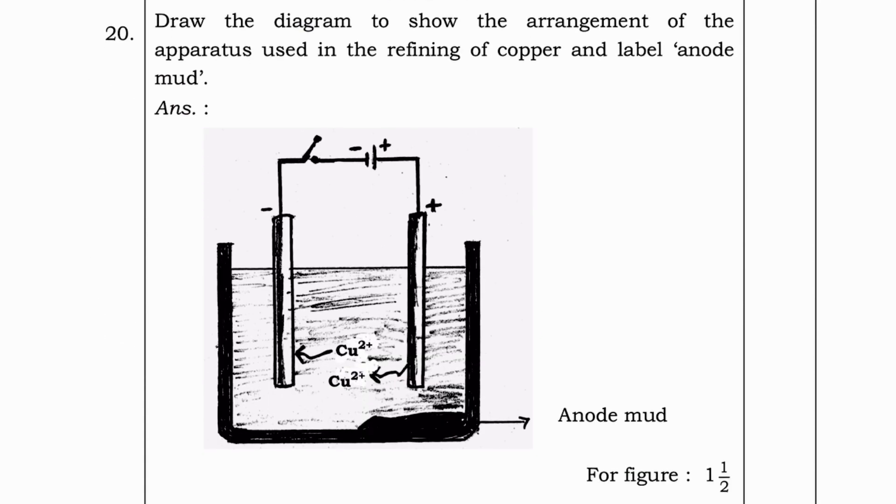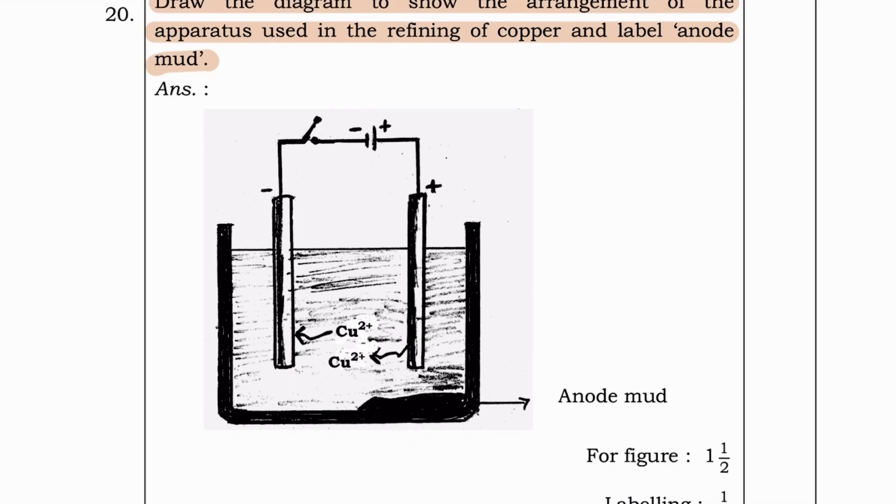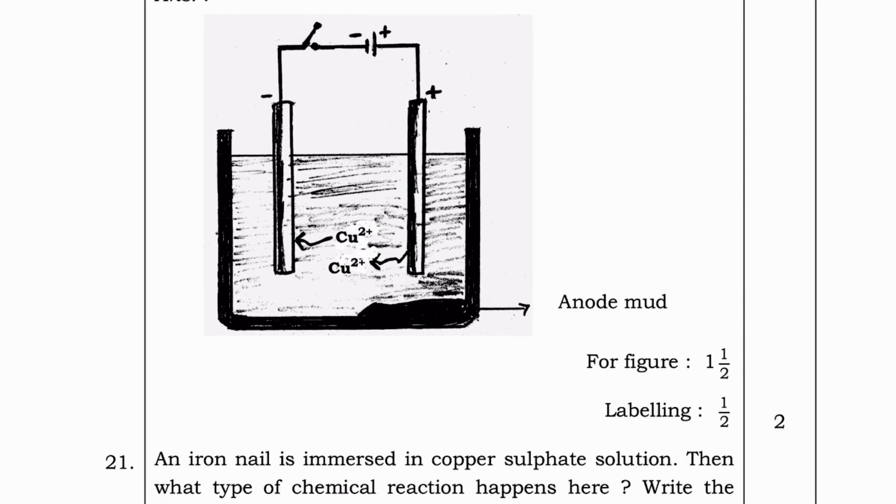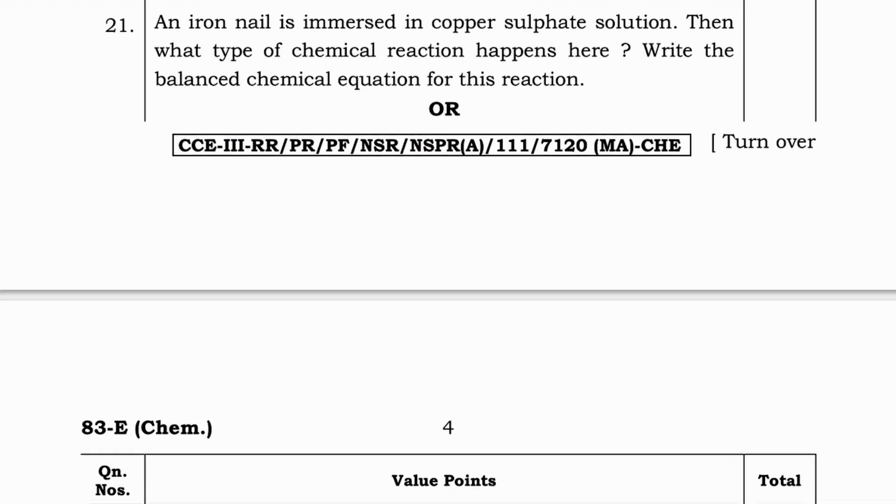Next question. Draw the diagram to show the arrangement of the apparatus used in refining of copper and label the anode mud. Observe the diagram. As you are familiar, I will go to next question.